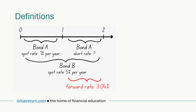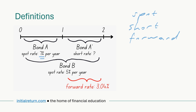First we need some definitions. We will define three separate terms: the spot rate, the short rate, and the forward rate. We have two bonds — Bond A and Bond B. The yield to maturities on these bonds are called spot rates. Bond A is a one-year zero coupon bond with a spot rate of seven percent. Bond B matures in two years — also a zero coupon bond.